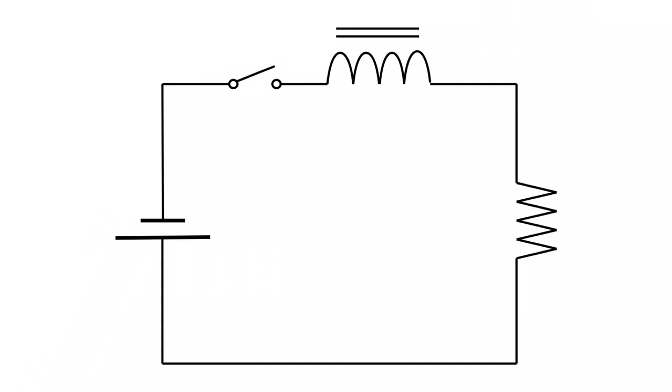This video is a walkthrough of what happens to the current in this circuit as it flows through, what this inductor does to it, and what happens to this resistor. We're going to work out both drops across the inductor and the resistor, and we're going to work out the energy stored in this inductor. I'm assuming you understand how the circuit works — this is more of a walkthrough of how the math works.